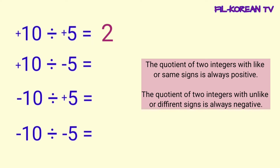Put a positive sign to the quotient since the numbers that we divide have the same signs — they are both positive integers. So, the answer is positive 2.